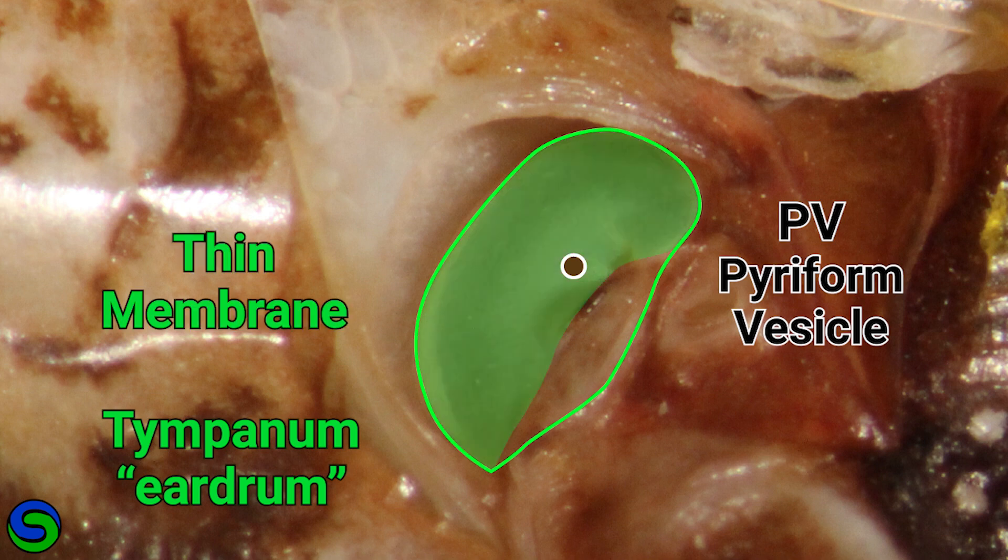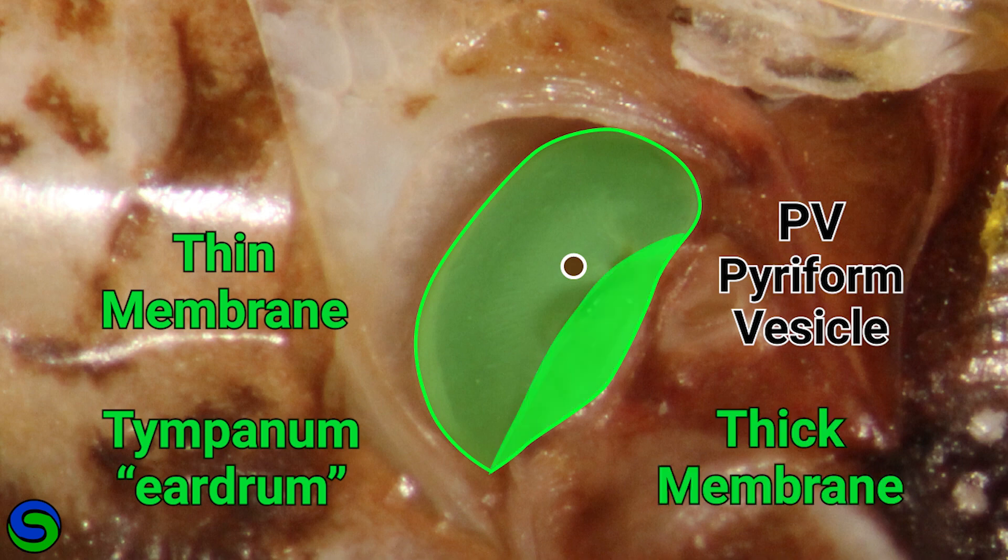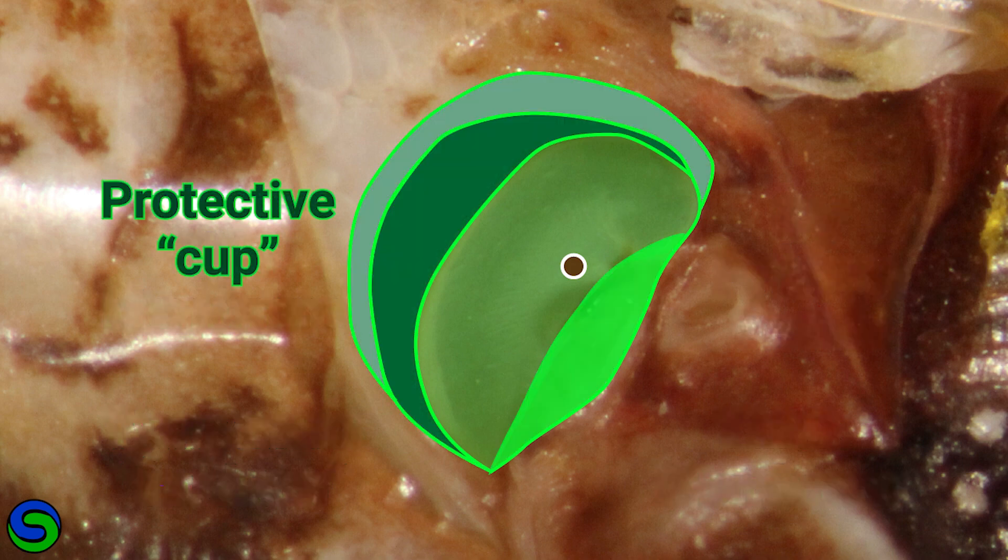The membrane is divided into thin and thick sections that move differently as we'll see in a moment. The membrane is protected by a cup of harder, more sclerotized tissues with the dark part in this image cupped in a concave manner.